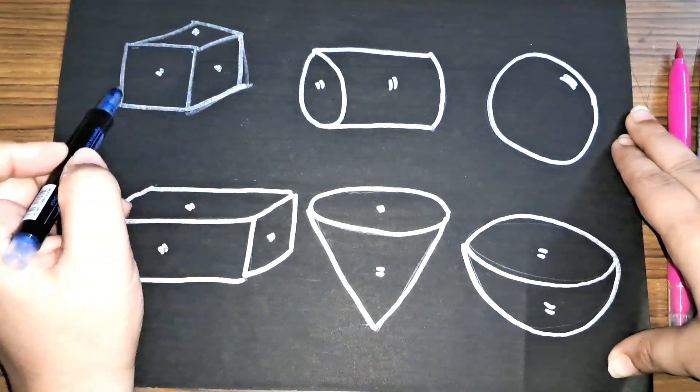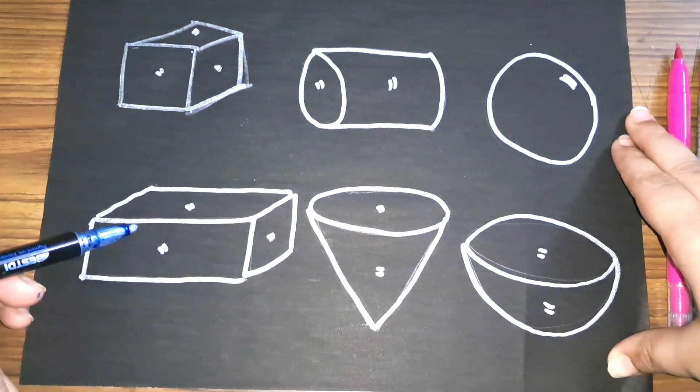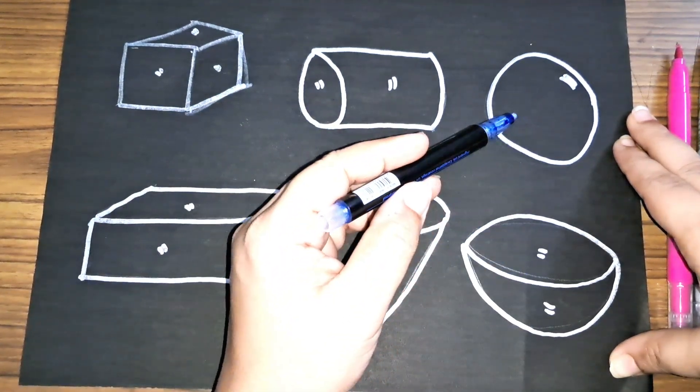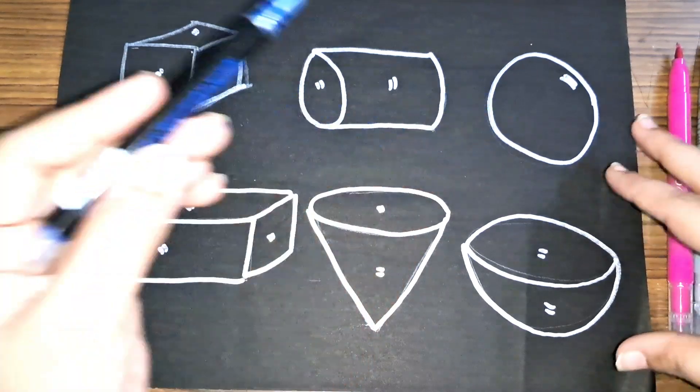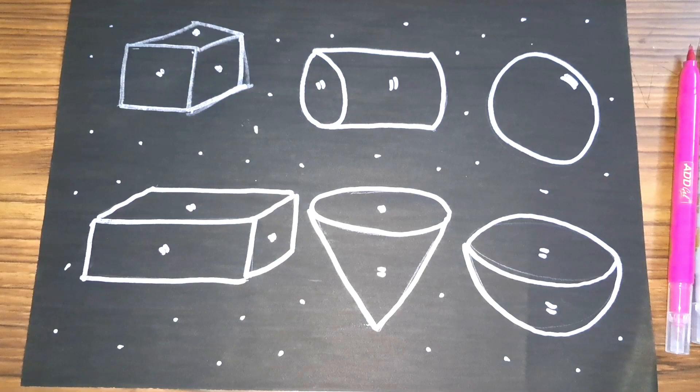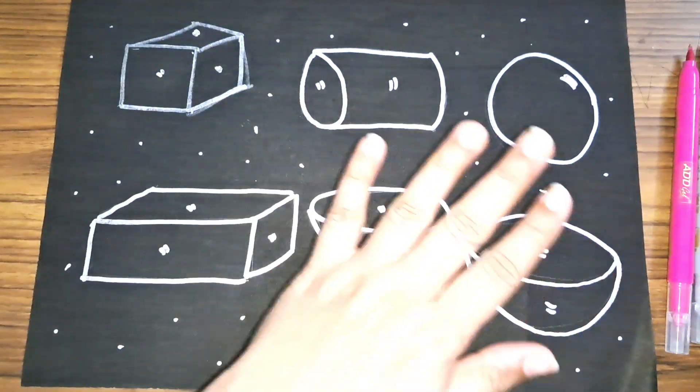This is a cube, cuboid, cylinder, cone, hemisphere, sphere. These are the 3D shapes.